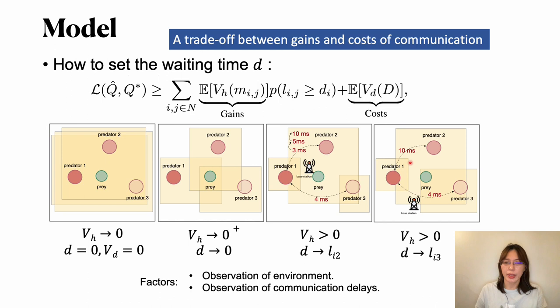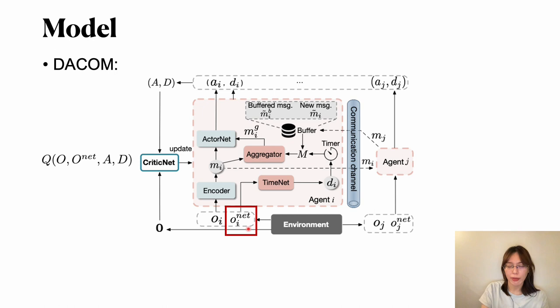Here we give the conclusion that the factors impacting the setting of waiting time is the observation of the environment, like full, partial, or very limited, and also the observation of delays, like here, no matter how it will pick this one to get the information or trade off between which one is lower.